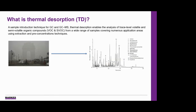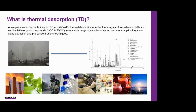So what is thermal desorption? TD is a sample introduction technique for GC and GCMS. It enables the analysis of trace level volatile and semi-volatile organic compounds — VOCs or SVOCs — from a wide range of samples covering numerous application areas using extraction and pre-concentration techniques. These samples could be anything from food and fragrance to materials and environmental, with a few examples shown at the bottom of the slide.